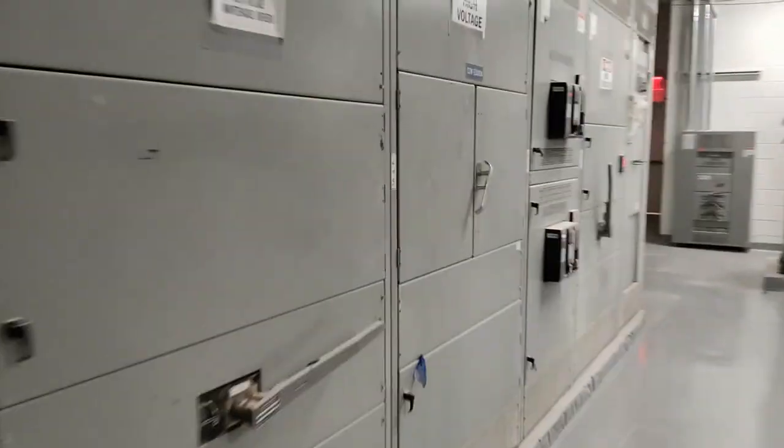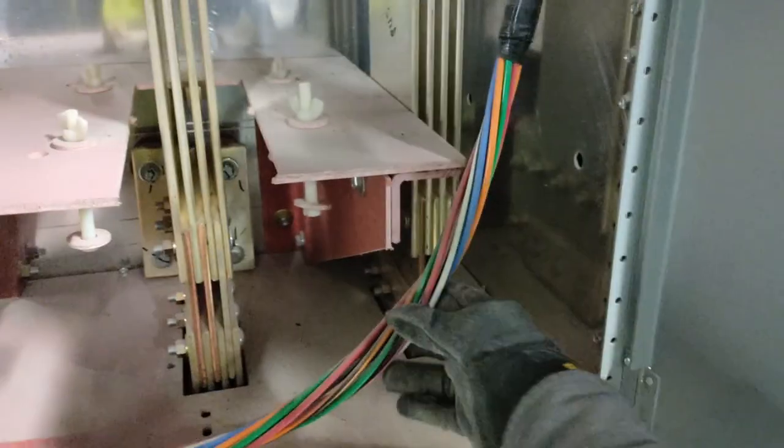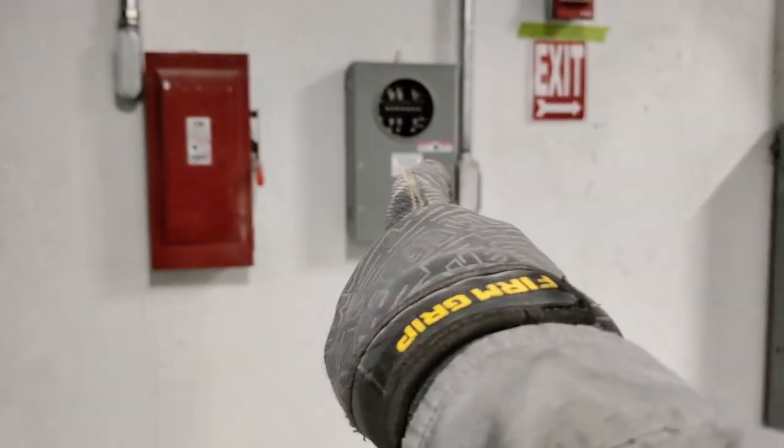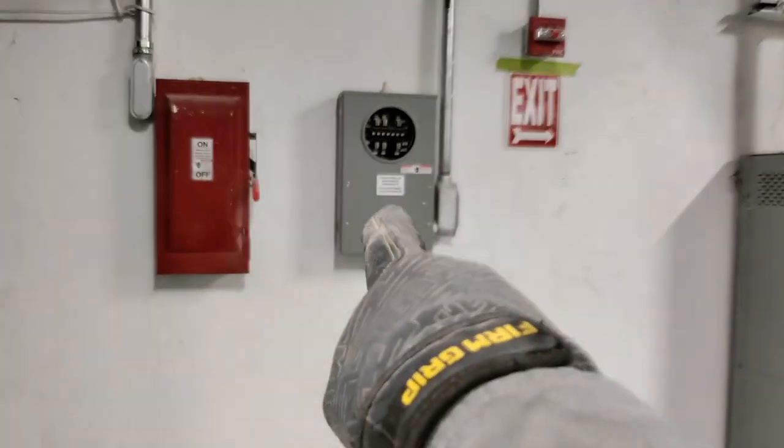Now, this service here hasn't been finished yet, so I can actually open this up. These wires here go all the way back to the meter over there. As you can see, it's not done yet, that's why I'm able to open this up. Once it is done, Con Edison will put their tag on it and lock it out.